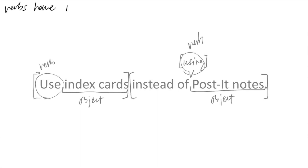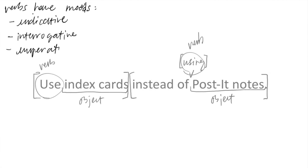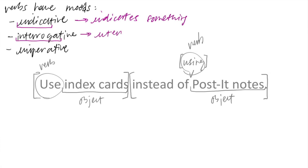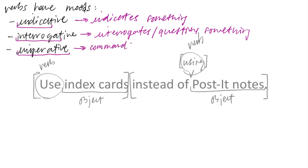There are three primary moods — we'll learn about a fourth in a few weeks, but it's not important to know now. The ones you should keep in mind are the indicative, the interrogative, and the imperative moods. The indicative mood indicates something; it says that something is the case. This is the mood we've been working with for the past few weeks. The interrogative mood interrogates someone or something. And the imperative mood commands someone or something to do something.